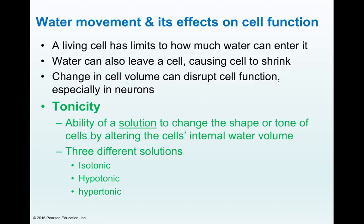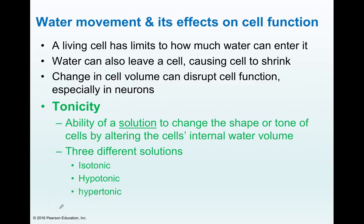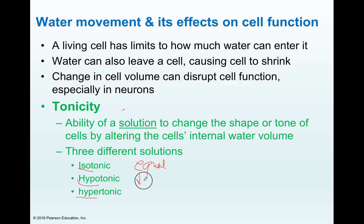Let's keep this in mind and take a look at the situations that you can place your cells in, and how those situations affect the shape of the cell and its activity. We have three words here: isotonic, hypotonic, and hypertonic. Iso is described as equal, hypo means below, and hyper means above.